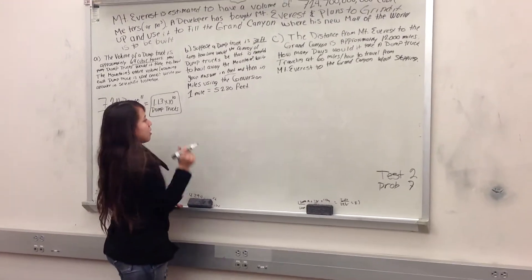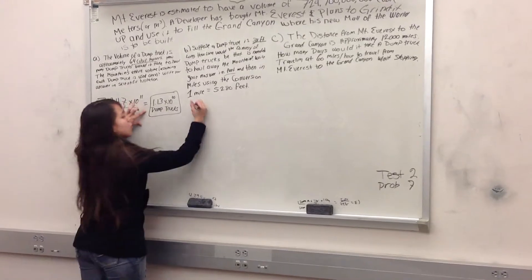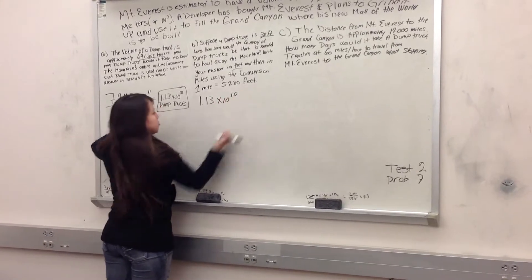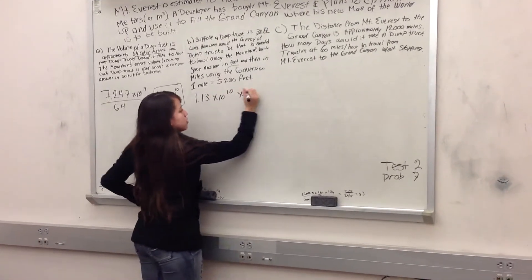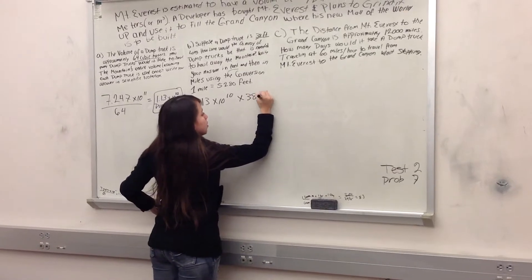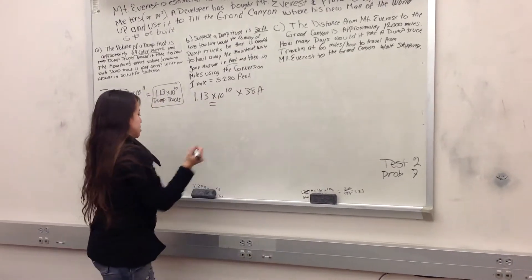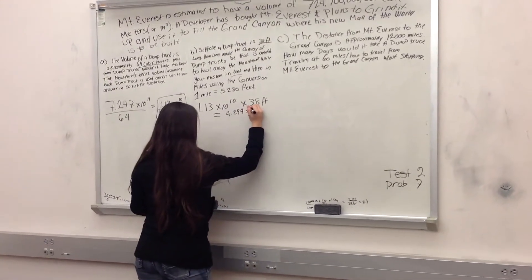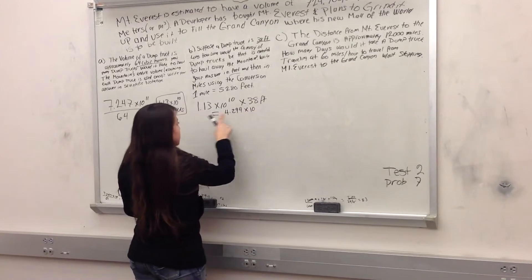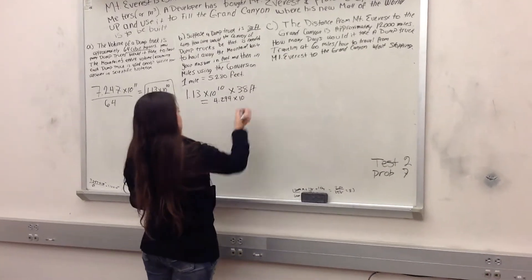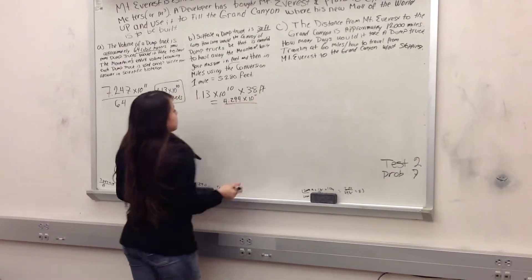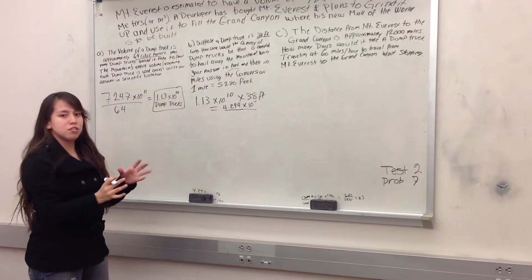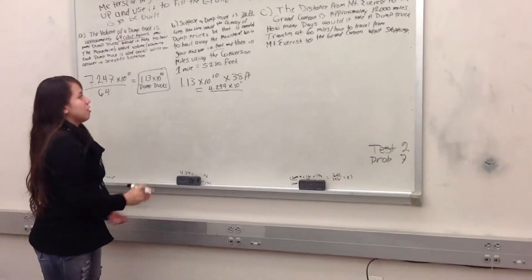So if we have 1.13 times 10 to the 10 dump trucks, and they're each 38 feet long, then it would be 4.294 times 10 to the 11. So that's how long it would be if each truck was in front of the other in a straight line.